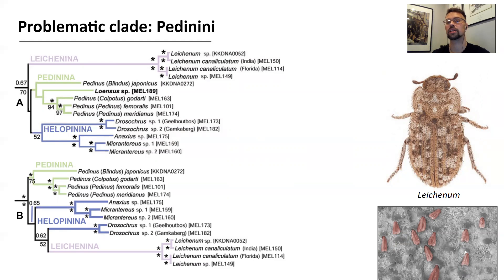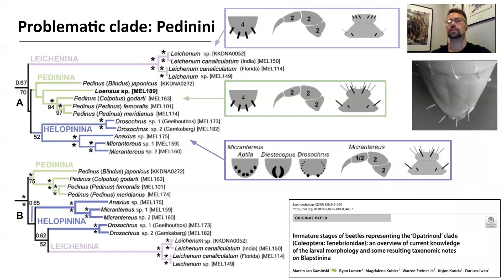Under some circumstances, there was a strong tendency in both Bayesian and maximum likelihood analyses to cluster Drosophorus of Jalapenina with Leichenum of Leichenina — this is the bottom tree. Both taxa were the most apomorphic lineages within Pedinini, which might suggest bias caused by long branch attraction. To test those topologies, we looked at the morphology of both adults and larvae. However, depending on the character set, both Leichenina and Jalapenina were extremely apomorphic. We just couldn't find any legitimate synapomorphies to link them together, so we sustained both entities as separate sub-tribes.